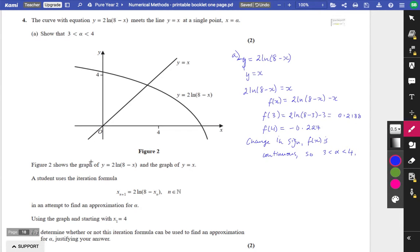Part B of the question. Okay, figure 2 shows these graphs, and it says a student uses this iterative formula in an attempt to find an approximation for alpha. So it's the same kind of setup that we've got before, and it says using the graph and starting with x1 equals 4. Notice they've started with x1 here. We've previously done everything with x0, but it's fine to do something with x1.